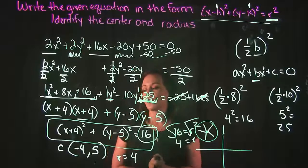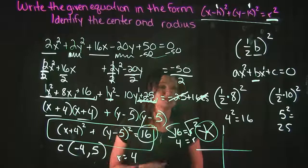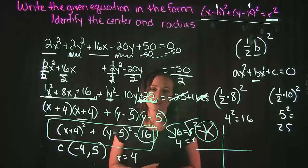But for this particular problem, here's our formula. Our center is (-4, 5). And our radius is 4. That's it for this problem.